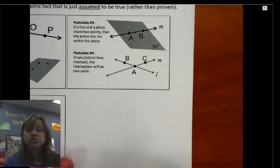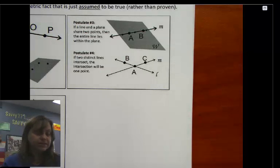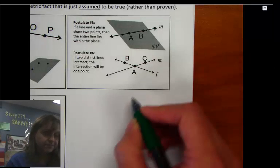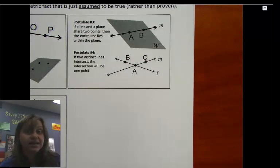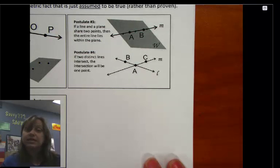Postulate number four. If I have two distinct lines, that just means two separate lines. Two distinct lines, and they intersect, then that intersection will be a point. That means that two lines that cross will only cross at one point. In this case, it's point A. In other words, they can't cross again, and so exactly one crossing is allowed for any two lines.